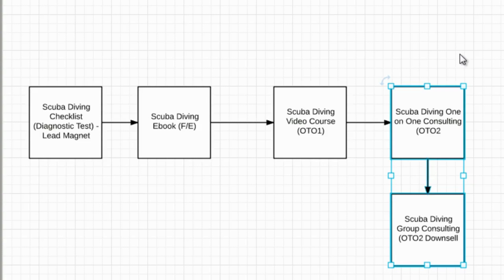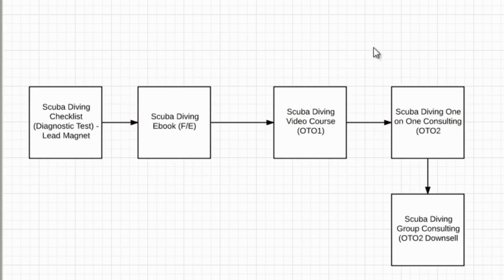Another service-based example: a plumber. I've actually purchased from a plumber who had one-time offers, but with service-based businesses you want to avoid forcing irrelevant offers. That plumber was actually doing bump sales, not real one-time offers, and it didn't make a lot of sense. In certain service-based businesses you really have to think about whether a one-time offer structure is right for you — things like plumbing may not work as well, whereas scuba diving or information products tend to be more open to it.